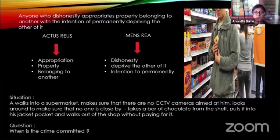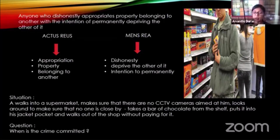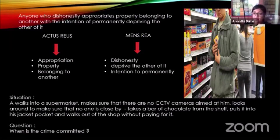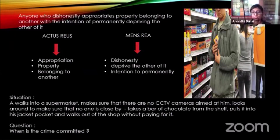Anyone who dishonestly appropriates property belonging to another with the intention of permanently depriving the other of it. Breaking that into actus reus and mens rea: the actus reus is appropriation of property belonging to another — that's the guilty act. The guilty mind — the mens rea — is dishonesty and an intention to permanently deprive the other of it. So there is one actus reus requirement: appropriation of property belonging to another. The mens rea requirements are two: dishonesty and an intention to permanently deprive.